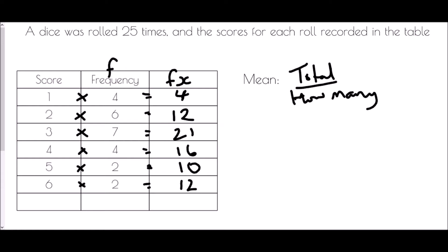The fx column is not the total score just yet. The total we're looking for is the sum of everything in the fx column — so four, six, seven, 13, 15 — carrying the one gives a total of 75. This is very important: this box represents the total of all the scores added together, giving us 75.